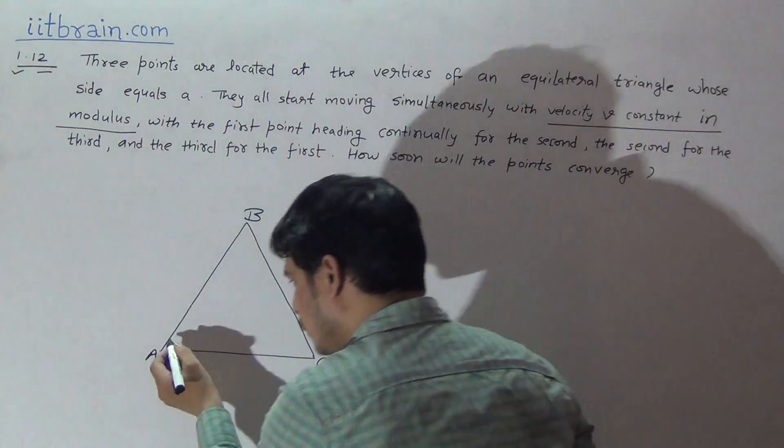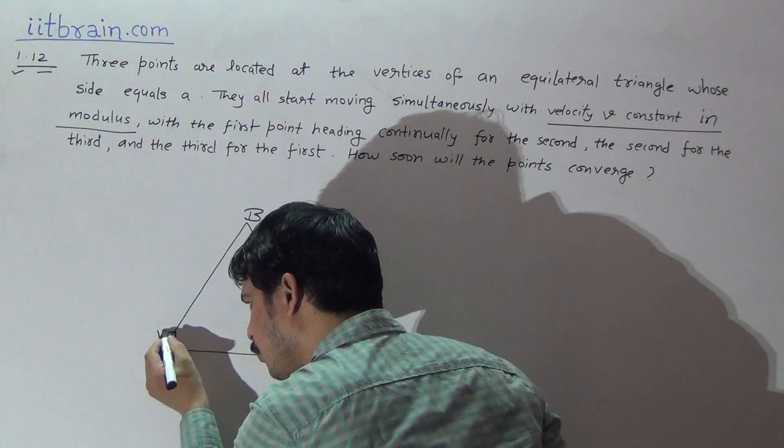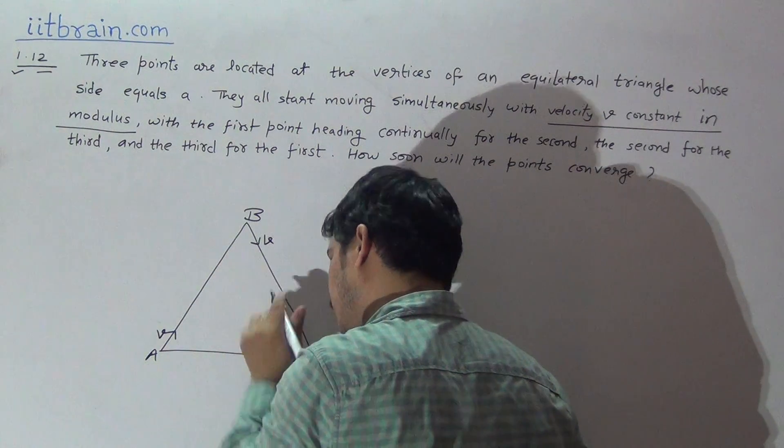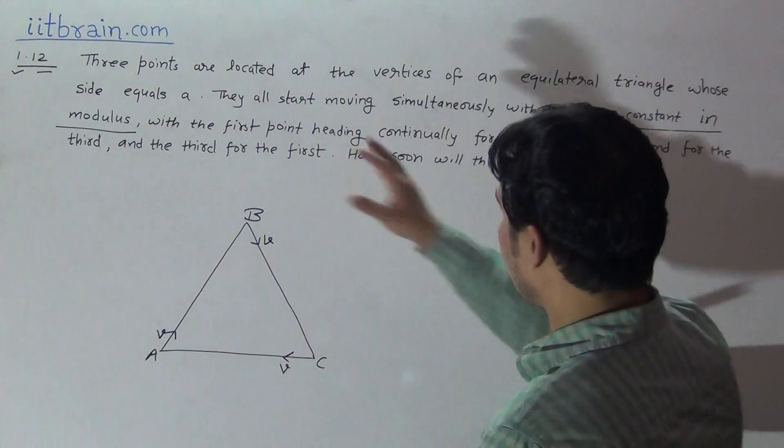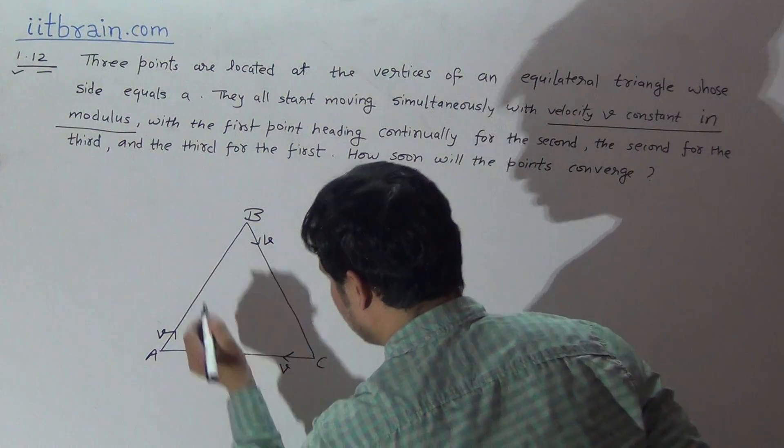Consider first: A particle is moving with V speed towards B, B with V speed towards C, and C is moving with V speed towards A. And the side of this equilateral triangle is A, all the sides are equal to A.